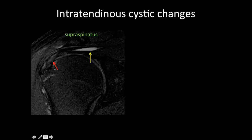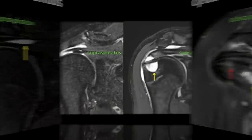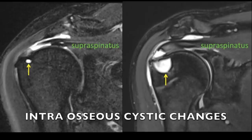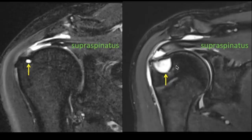In tendinosis there is accumulation of mucoid material within the tendon, which can track along the path of least resistance up to the myotendinous junction with formation of intratendinous cystic change. Similarly, a patient may show subscapularis tendinosis with formation of a ganglion cyst toward the myotendinous junction. The mucoid material can also enter the bone with formation of intraosseous cystic changes, which can range from tiny to very large.